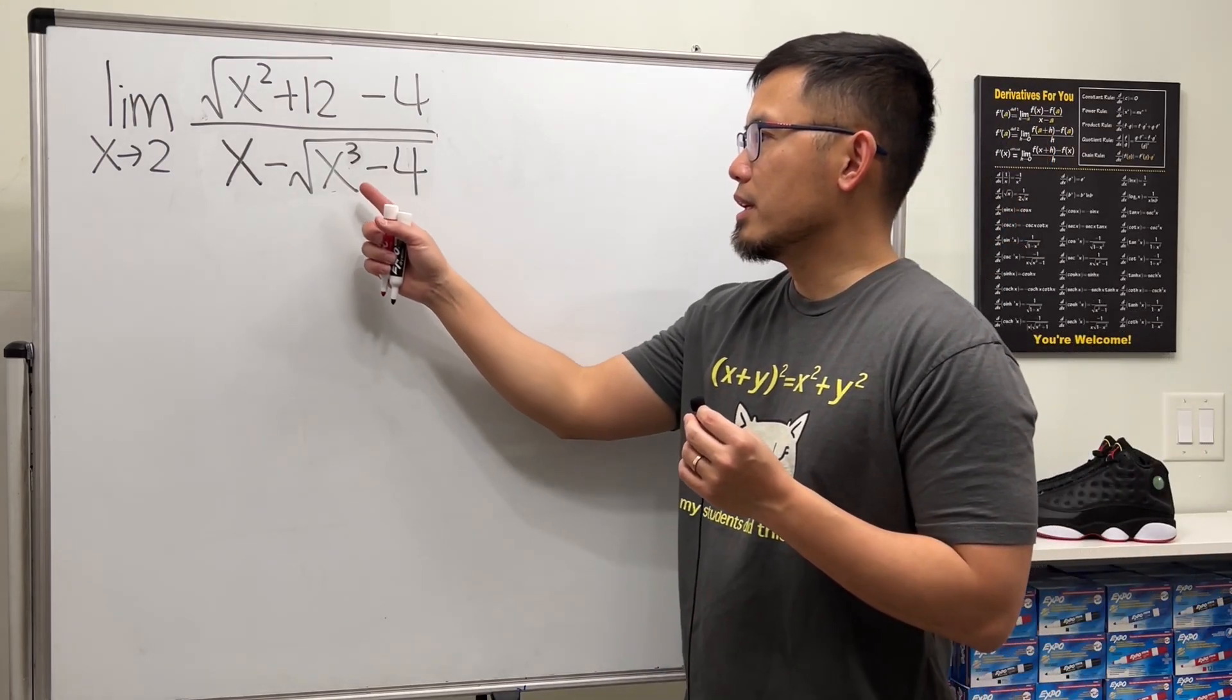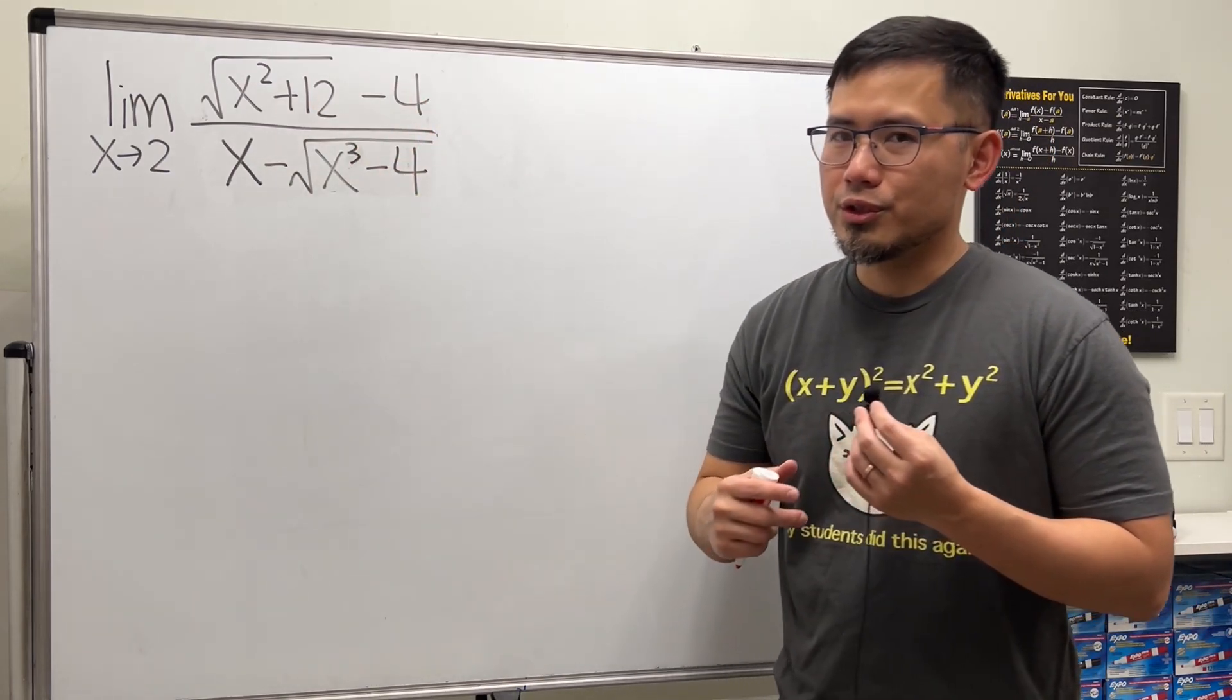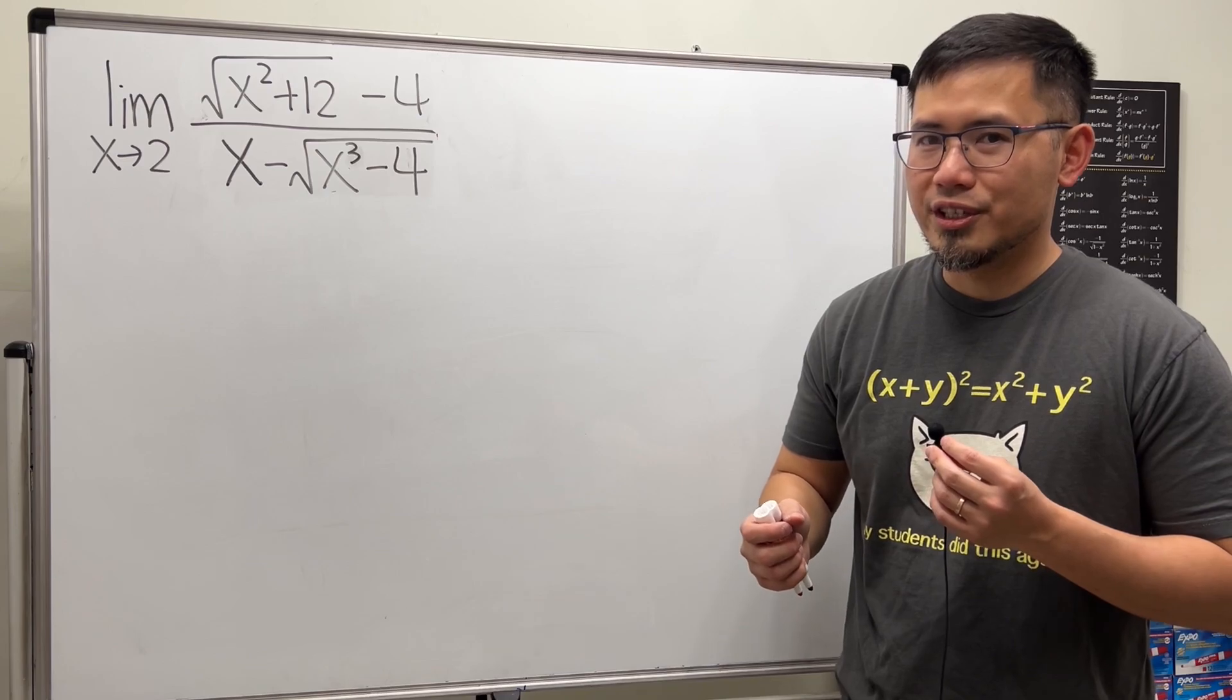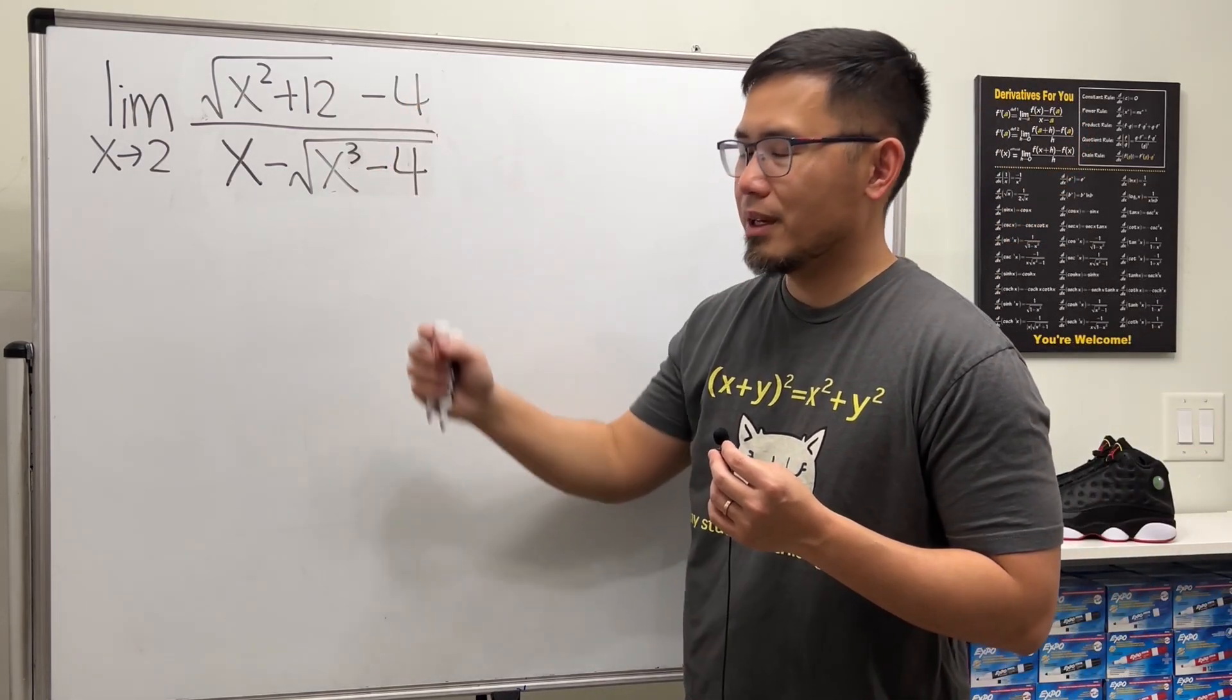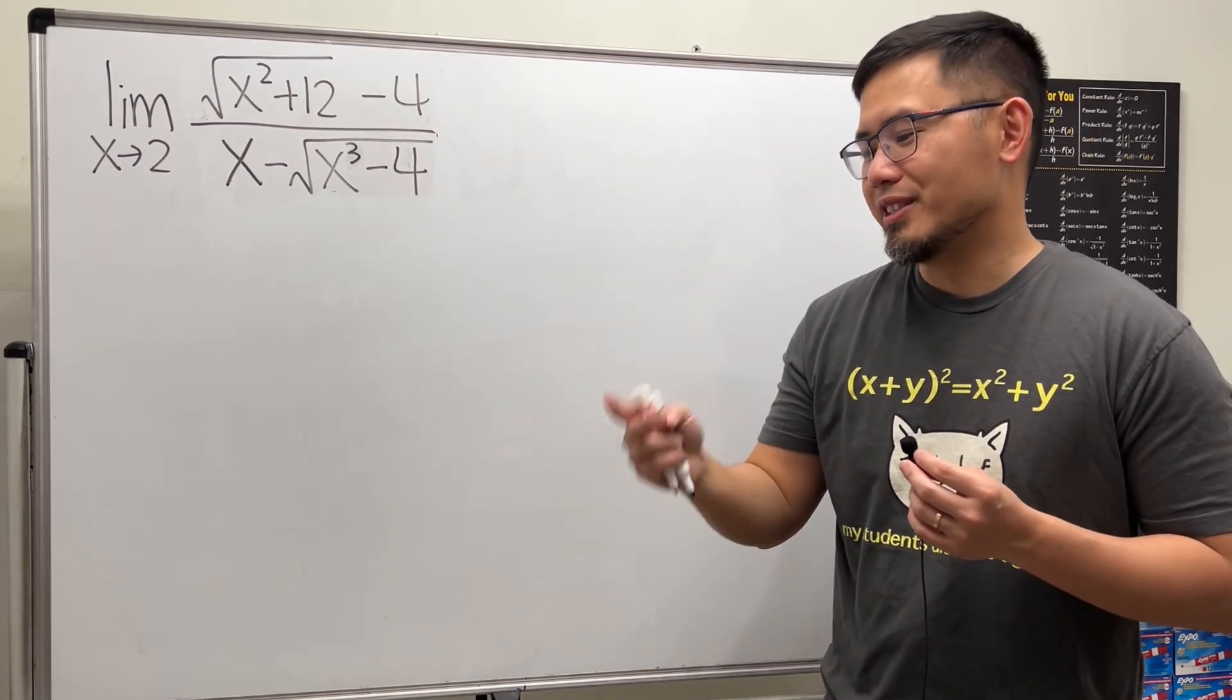To do so, because we have square roots, we should just try to multiply the top and bottom by the conjugate. But we have two of them. So yes, two conjugates. Here we go.